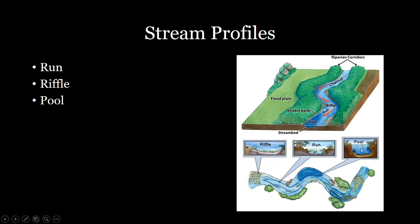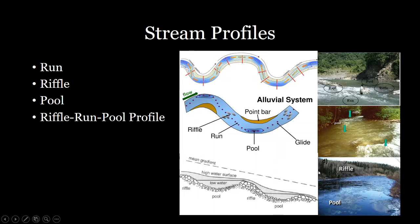Lastly we have pools, which are very deep sections of the river where the flow slows — like a swimming hole. Generally in a river you'll have a repeating pattern of these three different stream features: a riffle, run, pool system. For example, a riffle forms and then flows into a run and then a pool, and this will repeat as it moves downstream.